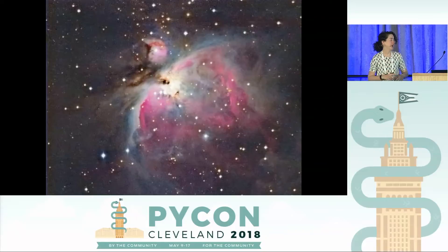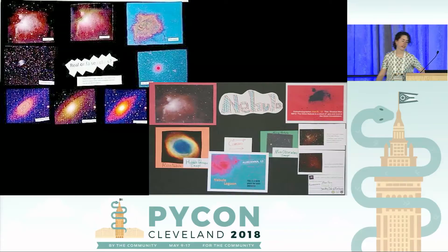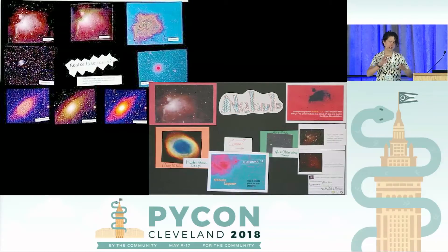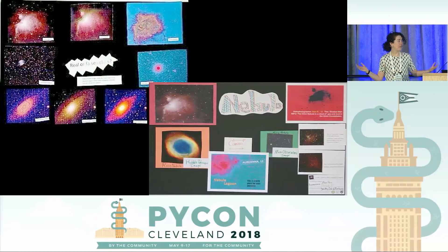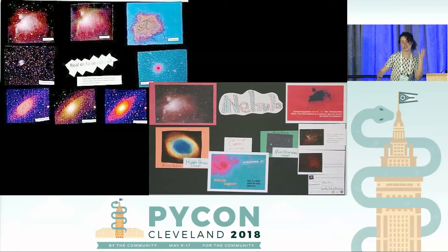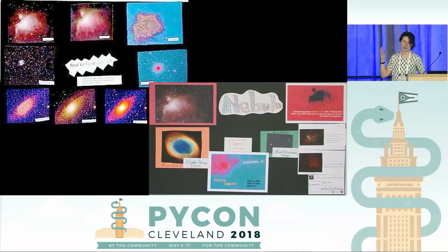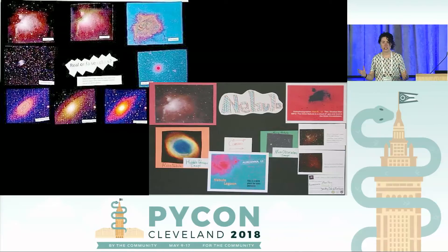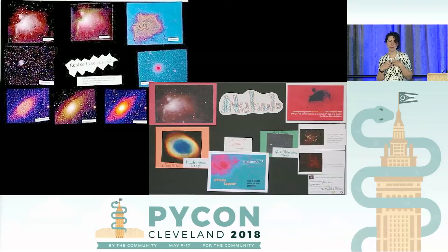One of the things we encouraged the kids to do was not just do that standard process — red, green, blue, full-color image. Have fun with it. Over-process it, under-process it, add crazy colors, do different things with it. It's still that exact same data, just displayed in a way you wouldn't really expect and in a way that was more personal to them — to the people who were doing the processing — and therefore trying to tell a story with that.